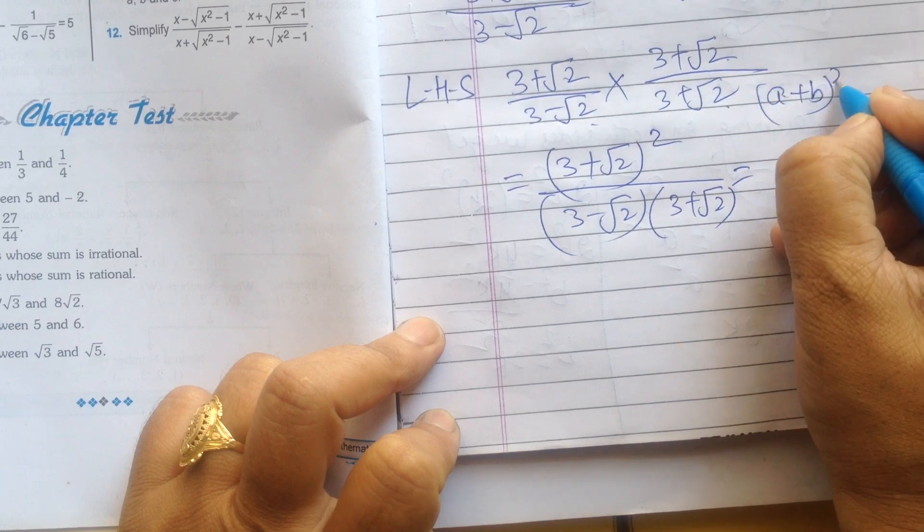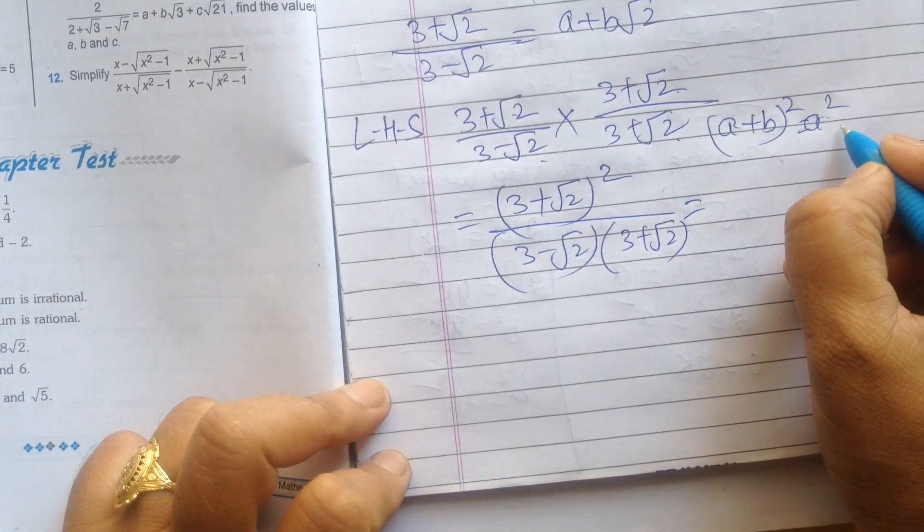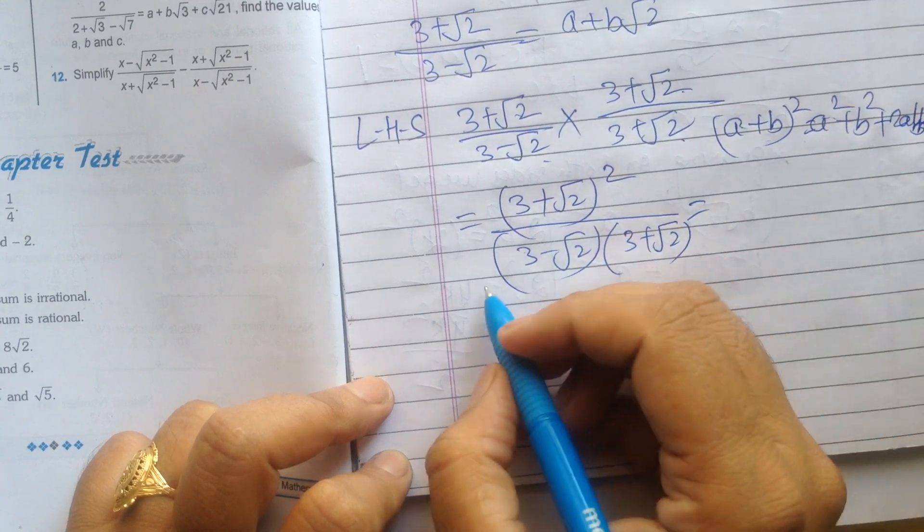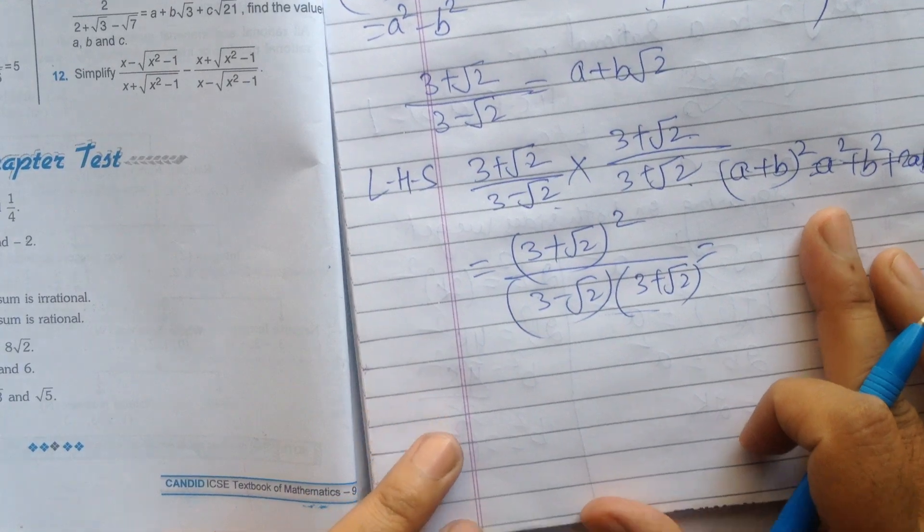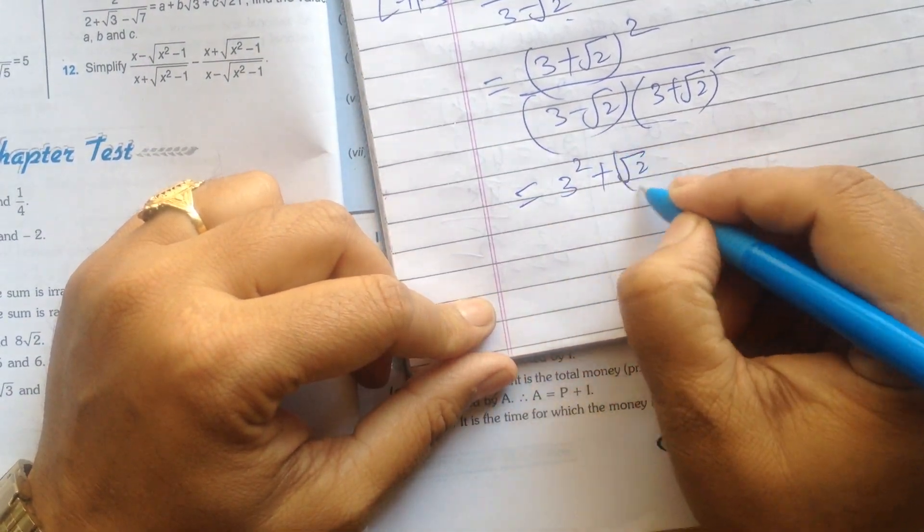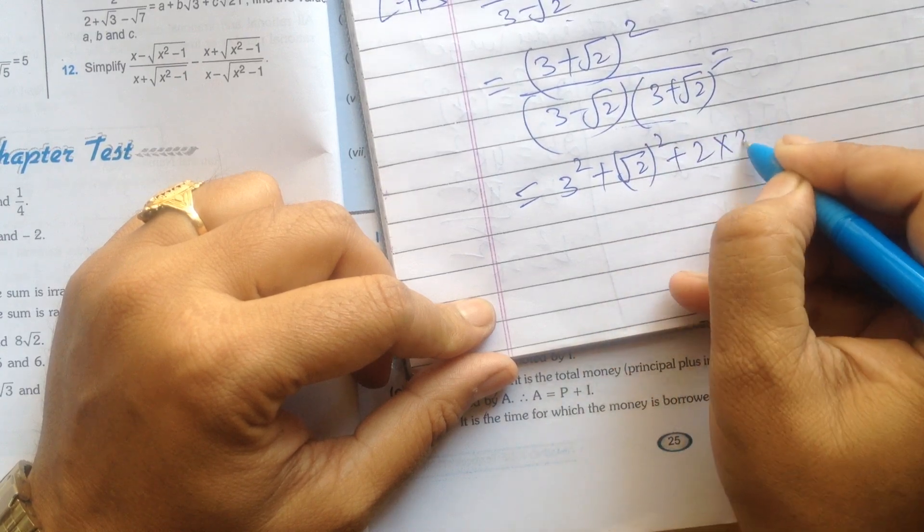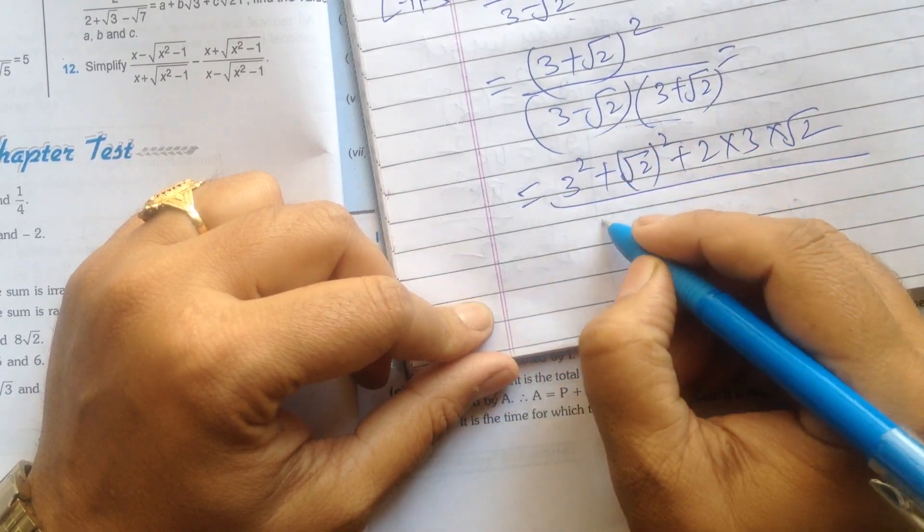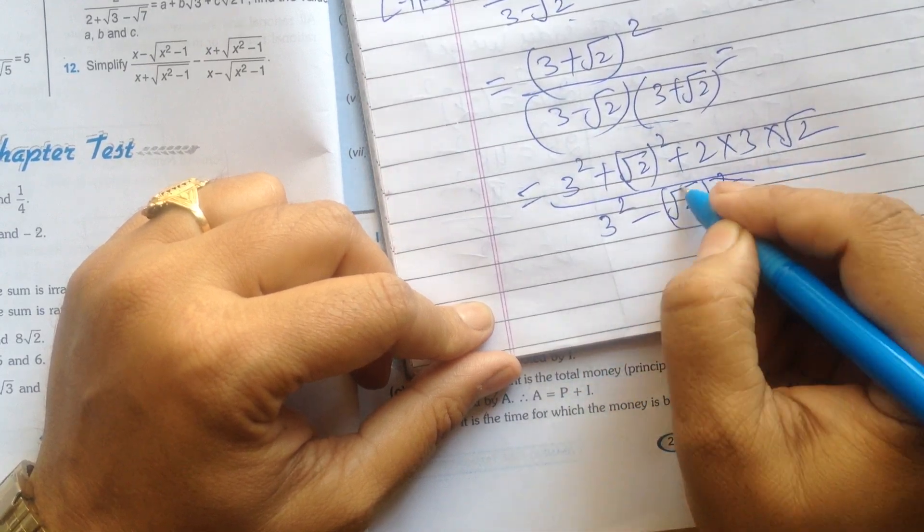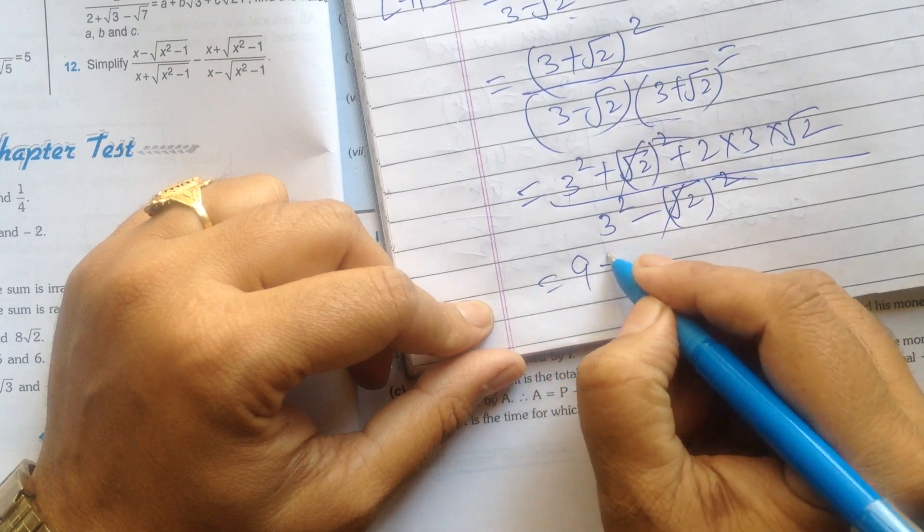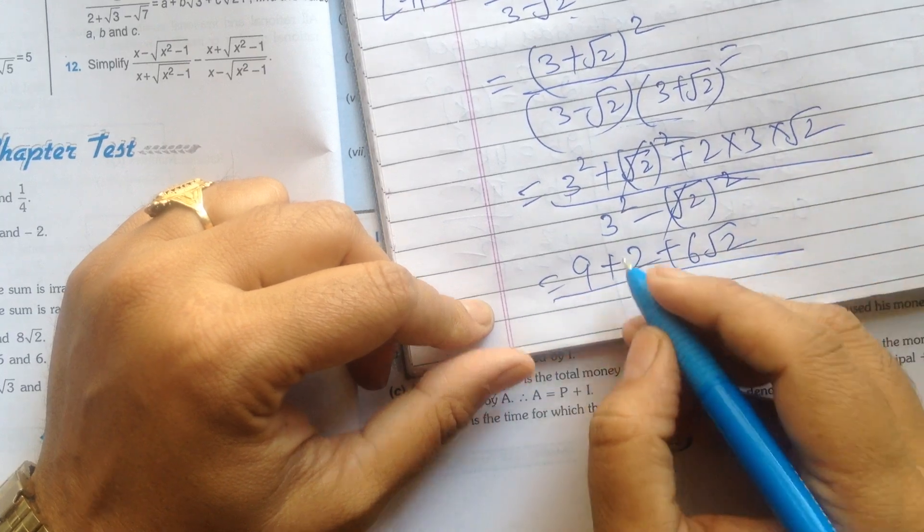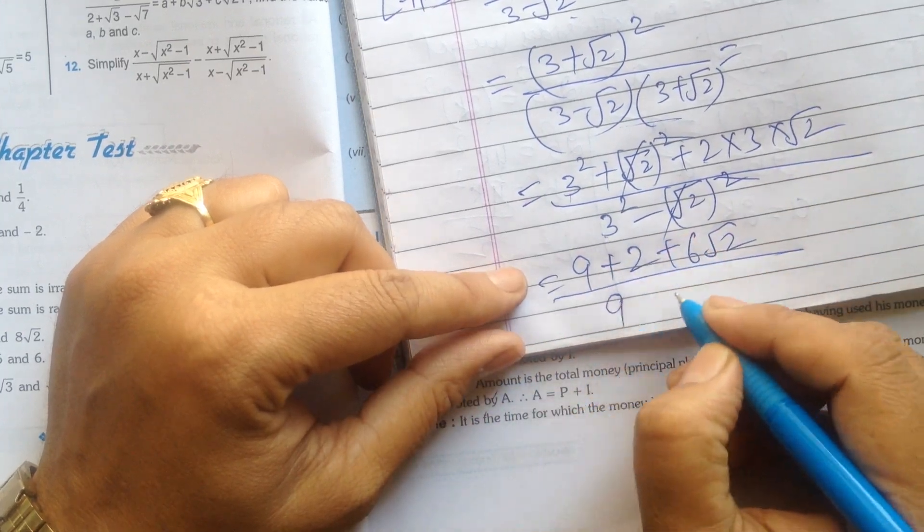Here we will apply a plus b whole squared. A plus b whole squared is equal to a squared plus b squared plus 2ab. In the denominator we use the other formula. So a is 3, 3 squared, square root 2 whole squared plus 2 into 3 into square root 2. In the denominator, a is 3, b is square root 2, this cancels with that. 3 squared is 9, 2 is left, 2 times 3 is 6 square root 2.